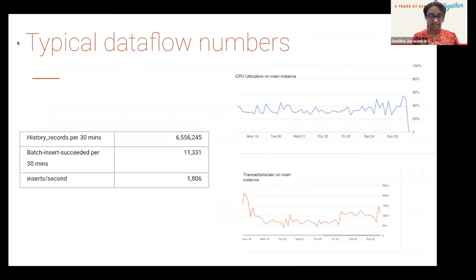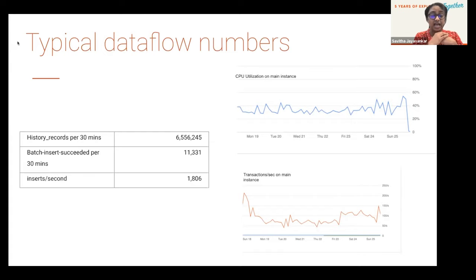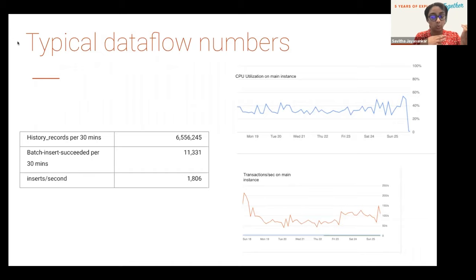Typical Dataflow numbers look like this: with millions of Niantic explorers, we generate around millions of trackable units. From those trackable units, we generate around 6 million historic metrics per 30 seconds. When you batch insert that under 30 seconds, it amounts to around 11,000 inserts per batch. The inserts per second were around 1,000, and transactions per second on the main instance stayed between 100 and 150. CPU utilization on the main instance with 12 virtual CPUs was always under 30 to 40 percent.